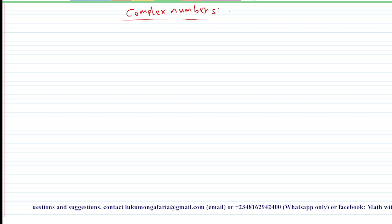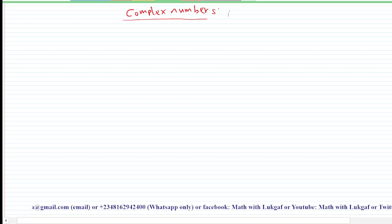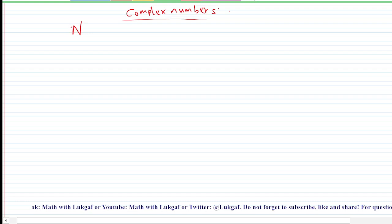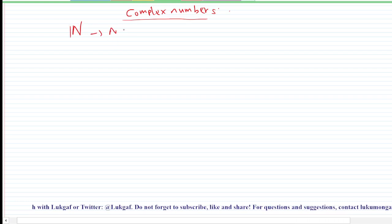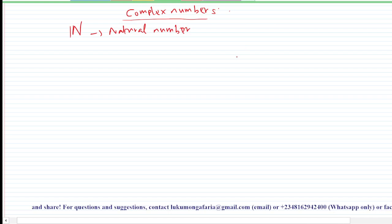In complex numbers, you will have come across different types of numbers in mathematics. In fact, you are all aware that we have different systems of numbers. For example, we have what we call natural numbers. Natural numbers are the set of counting numbers.